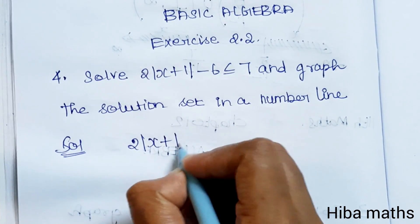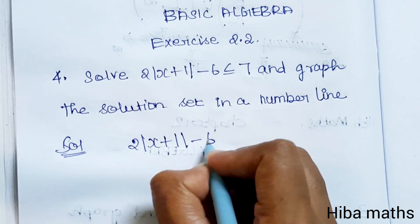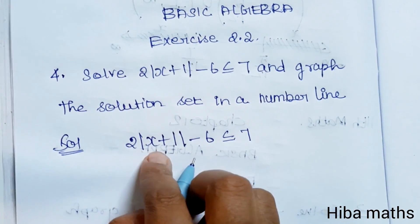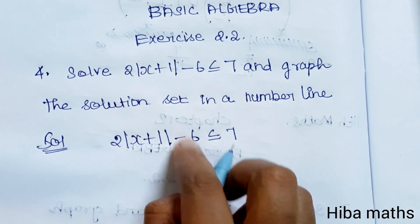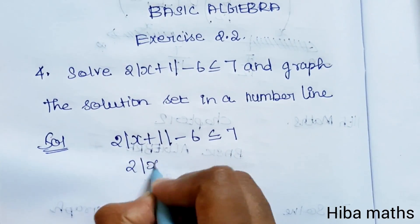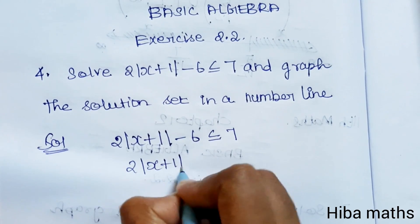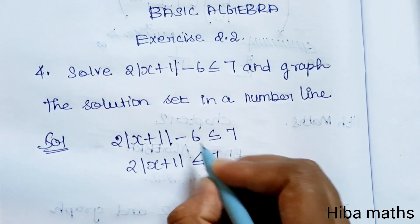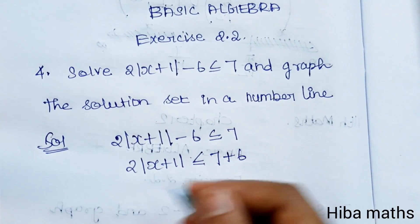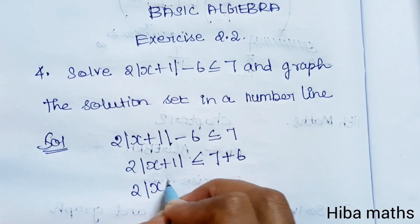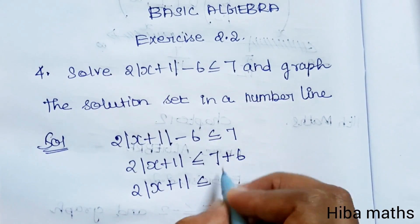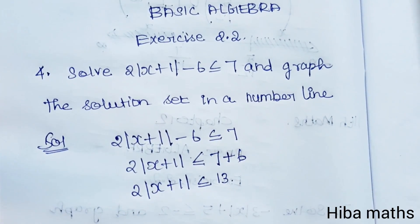So solving: 2 times modulus of x plus 1 minus 6 is less than or equal to 7. Move minus 6 to the other side: 2 modulus of x plus 1 is less than or equal to 7 plus 6, which gives 2 modulus of x plus 1 is less than or equal to 13.